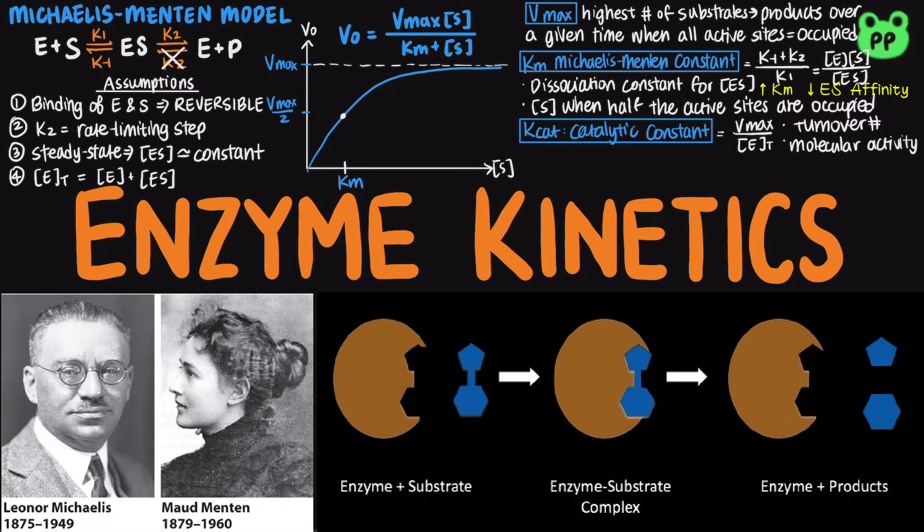Enzyme efficiency can be calculated by dividing Kcat by Km. It is characteristic of an enzyme, and it is also known as the specificity constant. An enzyme is most efficient when it has high Kcat, meaning high catalytic abilities, and low Km, meaning high enzyme substrate affinity.